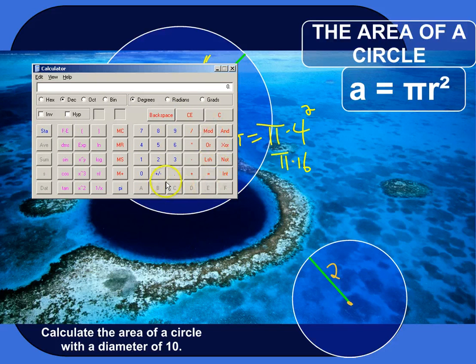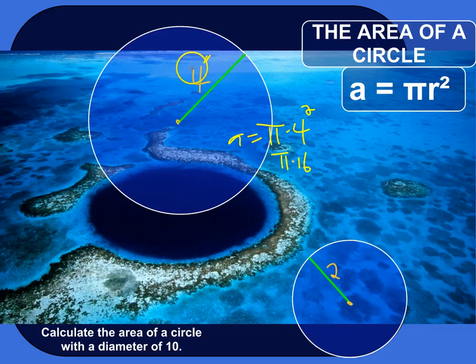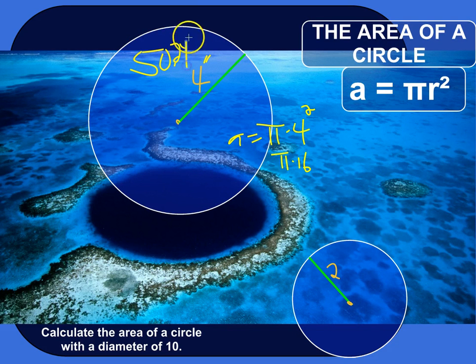If you don't have a pi button, you can just estimate pi to 3.14. So, 3.14 times 16, roughly 50.24 inches squared for that circle, square inches.